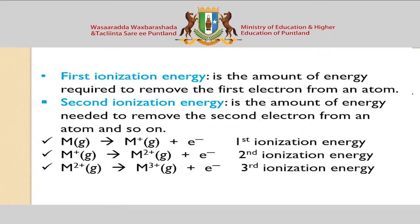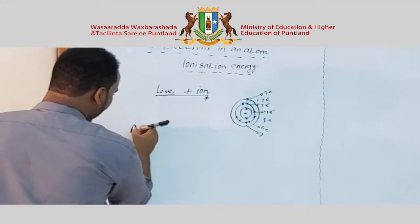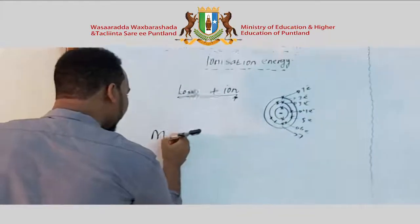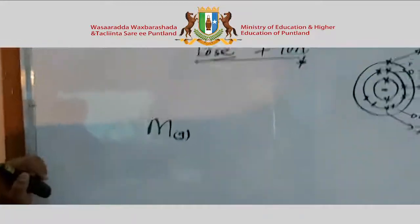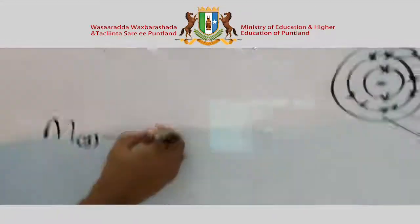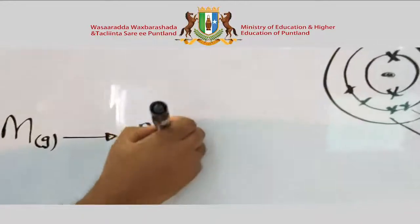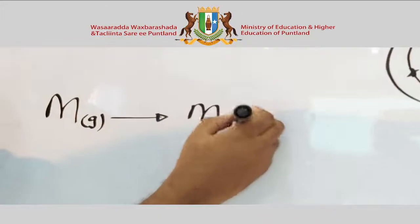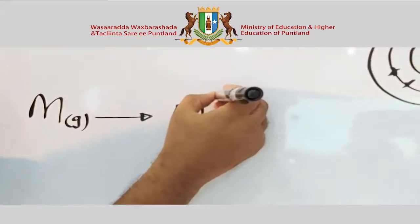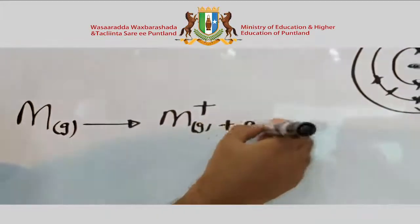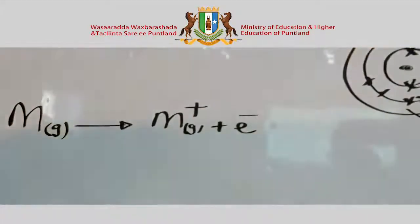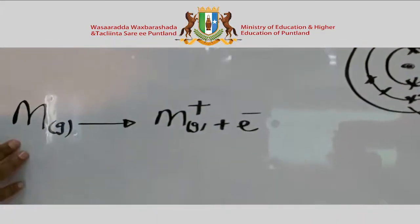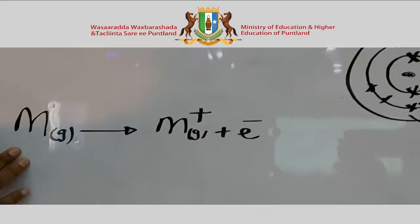The first ionization energy equation uses M to represent the metal or element. If it's in the gaseous state, you write M gas, and the electron that is removed becomes a positive ion — M⁺. That is what we call the first ionization energy equation.